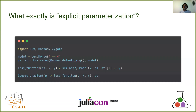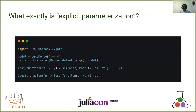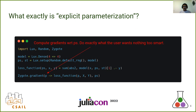Now for Lux, what we do is we explicitly specify what the trainable and non-trainable variables of the model are. The Lux setup function specifies the trainable variables and the non-trainable variables. In the Zygote call, you have to explicitly pass in what the parameters are with respect to which you want the gradients. We are essentially asking Zygote to not do anything smart and just use the parameters that we are passing in. This is a more general approach because it works not only with Zygote, but with all other AD frameworks like Enzyme or ReverseDiff.